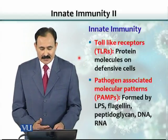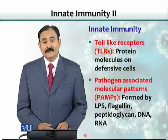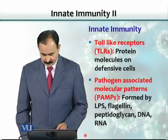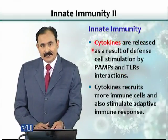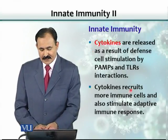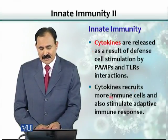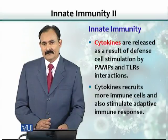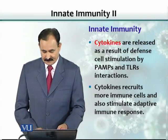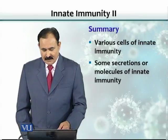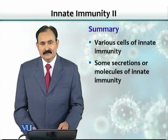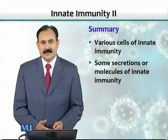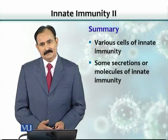Those cytokines are needed for both the innate immune response and the adaptive immune response. When released, cytokines can recruit more immune cells to the site where the organism is trying to establish infection. In summary, there are various cells, secretions, and physical and chemical barriers that make up the innate immune response.